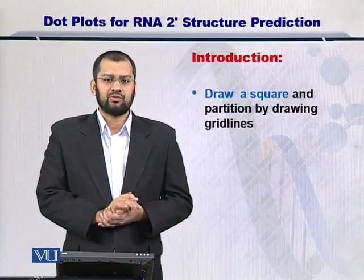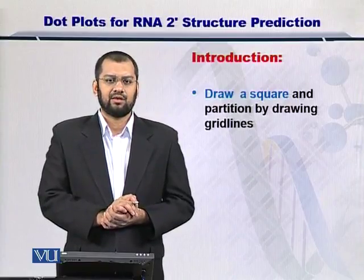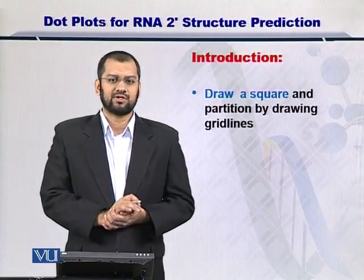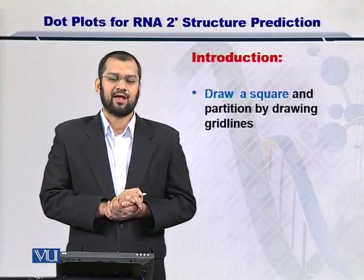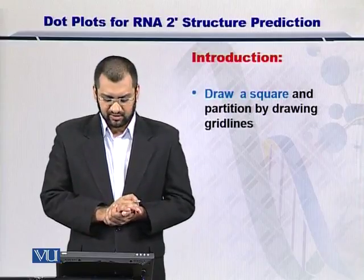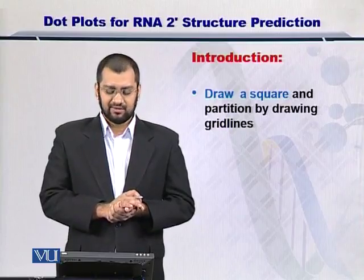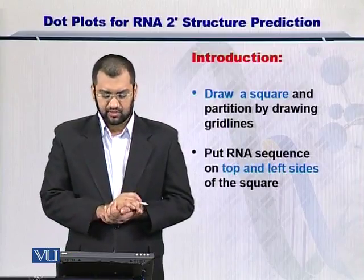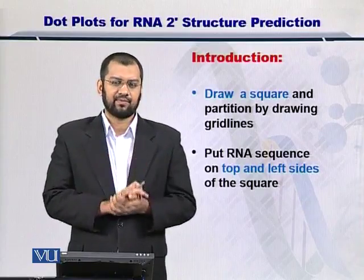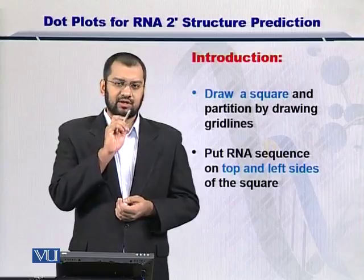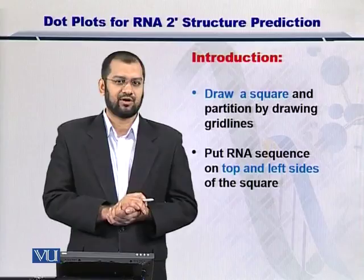The strategy to undertake this task is the dot plot. To make a dot plot, you need to just have the primary structure of the RNA molecule — that is, the sequence — and then you draw a square and partition it by drawing grid lines. You put the RNA sequence on top and on the left side of your square, and then you connect each complementary nucleotide with a dot. That's why it's called a dot plot.